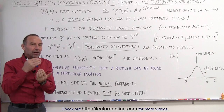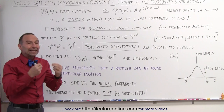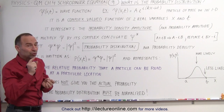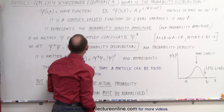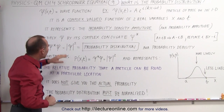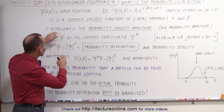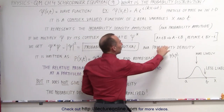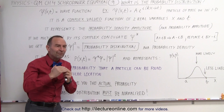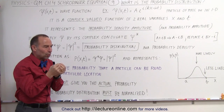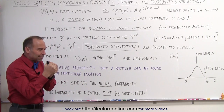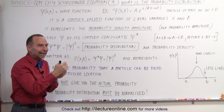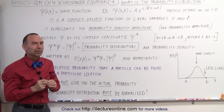We realize that that function is a complex-valued function, therefore it cannot represent a real thing, and it doesn't. It does, however, have two real variables, x and t. We can say that the wave function represents the probability density amplitude, also known as the probability amplitude. So the value of the function, even though it's an imaginary number, the magnitude of that number does reflect — there's a relationship between that and eventually the probability of finding a particle in a particular place.